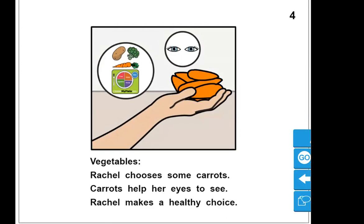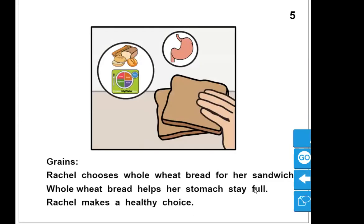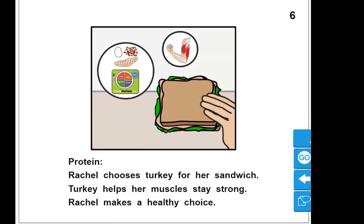Vegetables: Rachel chooses some carrots. Carrots help her eyes to see. Rachel makes a healthy choice. Grains: Rachel chooses whole wheat bread for her sandwich. Whole wheat bread helps her stomach stay full. Rachel makes a healthy choice. Protein: Rachel chooses turkey for her sandwich. Turkey helps her muscles stay strong. Rachel makes a healthy choice.